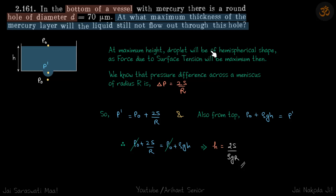At maximum height, the droplet will be of hemispherical shape as force due to surface tension will be maximum then. We know that pressure difference across the meniscus is 2S/R.